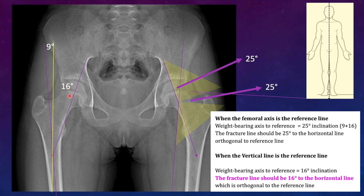The anatomical axis of the femur is 9 degrees angulated to the vertical line when standing, making the angle 25 degrees when the reference line is parallel to the femur shaft. Therefore, the weight-bearing axis transmitted to the hip joint is at 25 degrees in relation to the femur axis. This forms the basis of reconstructive procedures such as valgus osteotomy for neck of femur non-union, where we target the fracture angle at 25 degrees to ensure compressive forces are perpendicular to the fracture.